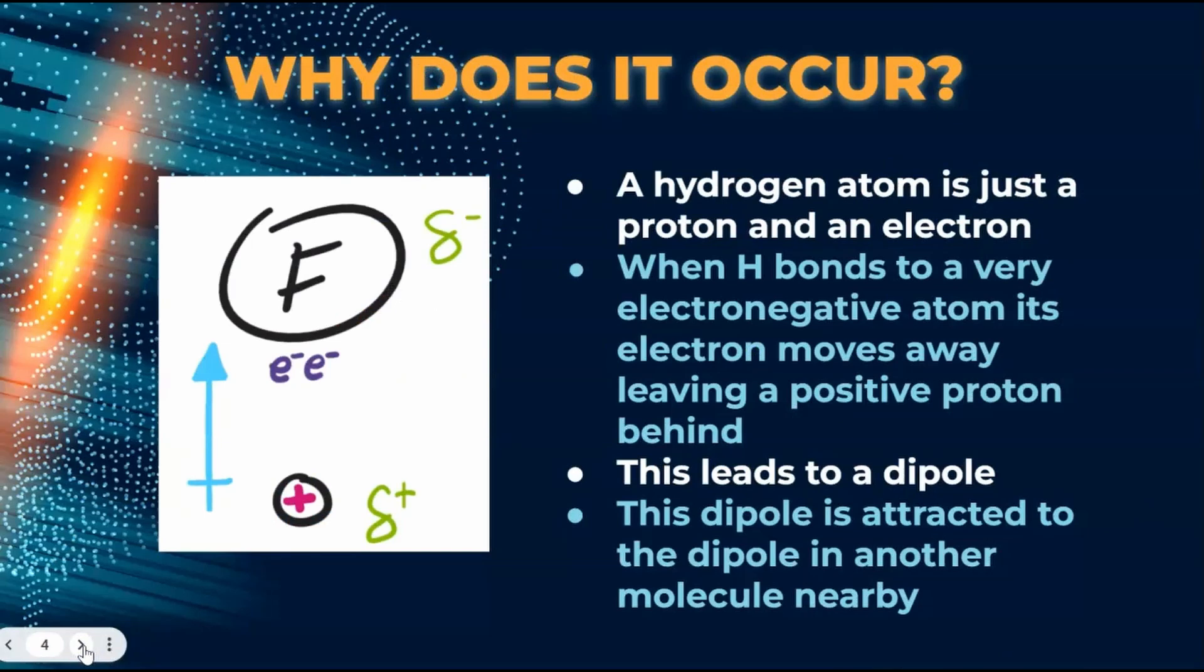Okay, so why does it occur? As we explained, hydrogen is super unique. It's just a proton and an electron. So when you get an electronegative atom like F, O, or N, they pull the shared electrons closer to themselves. This means that the hydrogen is basically just an exposed proton. This is what creates the dipole. This dipole will be attracted to the dipole in another molecule nearby.